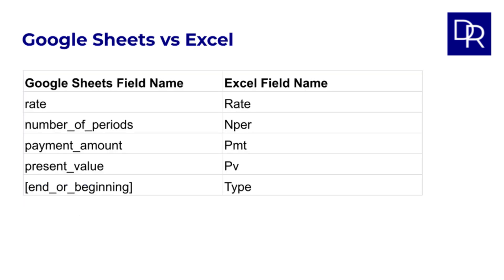It's worth noting that in Excel, the FV function works in exactly the same way, with the same inputs in the same order. The only difference with Google Sheets is that the argument names are slightly different. For example, number of periods in Google Sheets is called NPER in Excel. Payment amount is PMT, present value is just PV. I've included both the Google Sheets and Excel field names in the spreadsheet in the final tab.